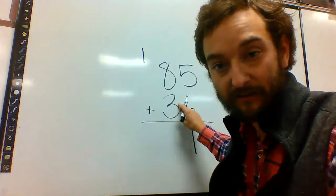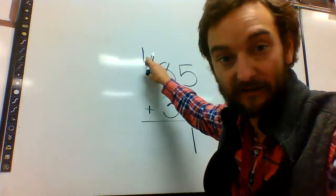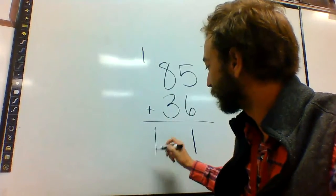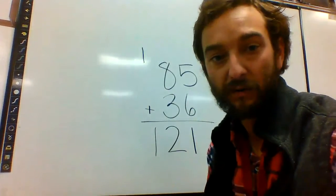8 plus 3 is 11. Add this guy, it's 12. When we don't have anything else, just drop it straight down. You drop your 12 down. So you get that 121.